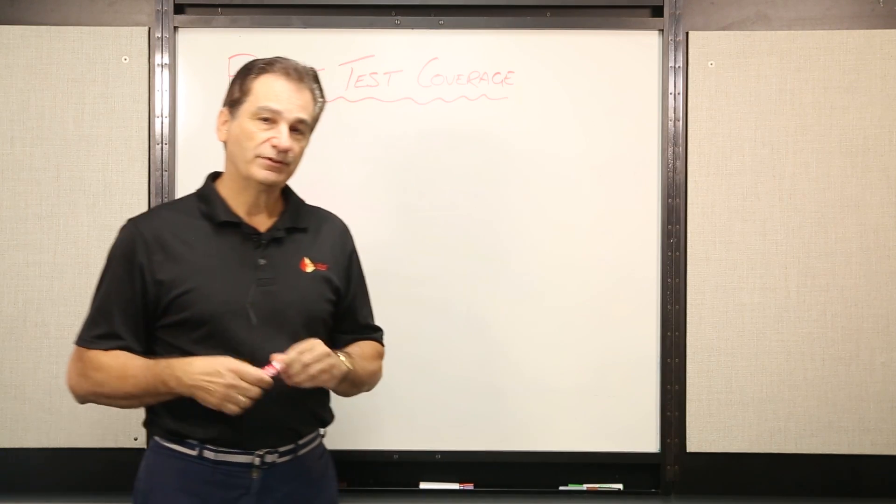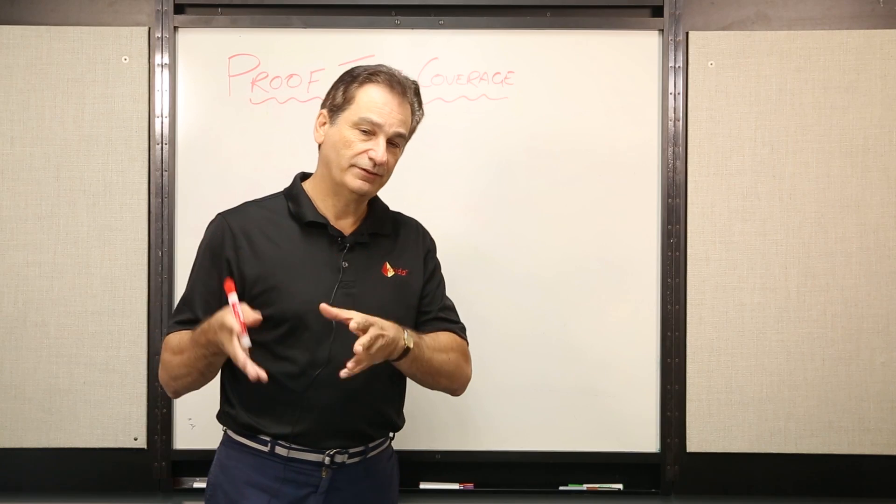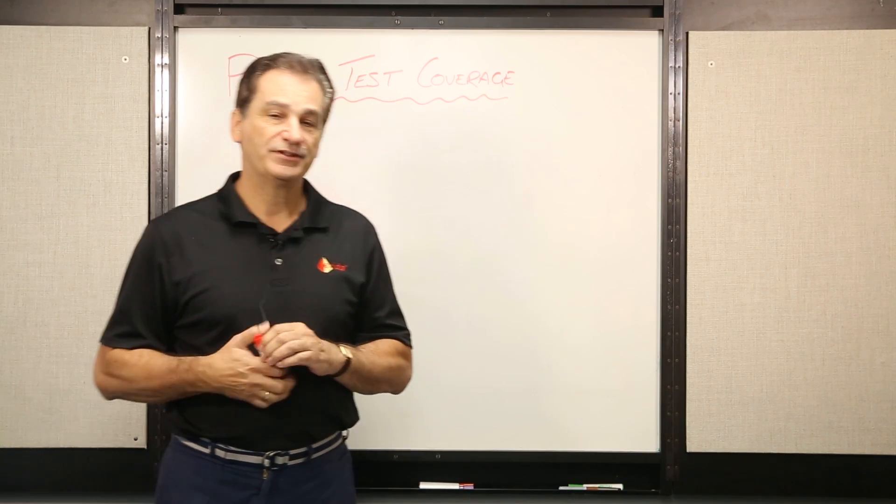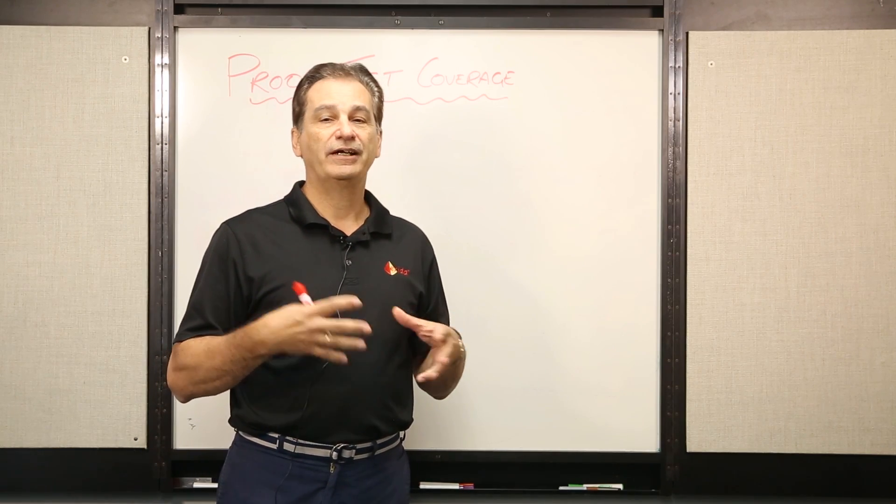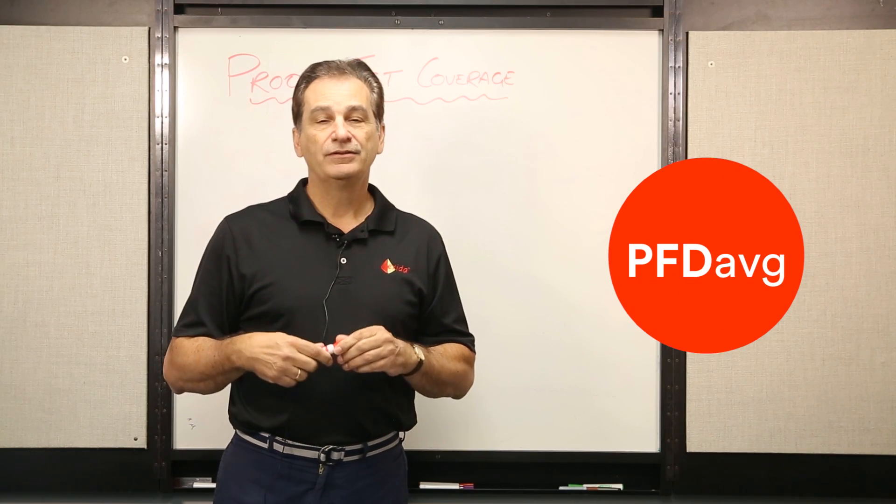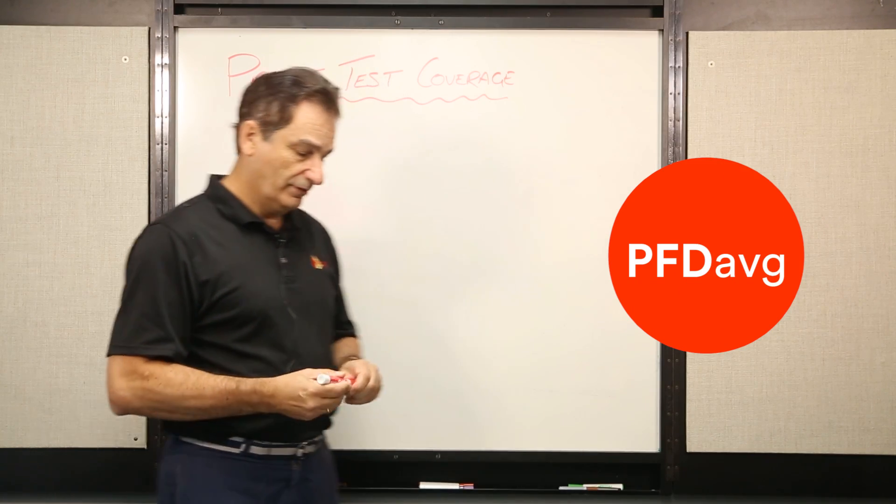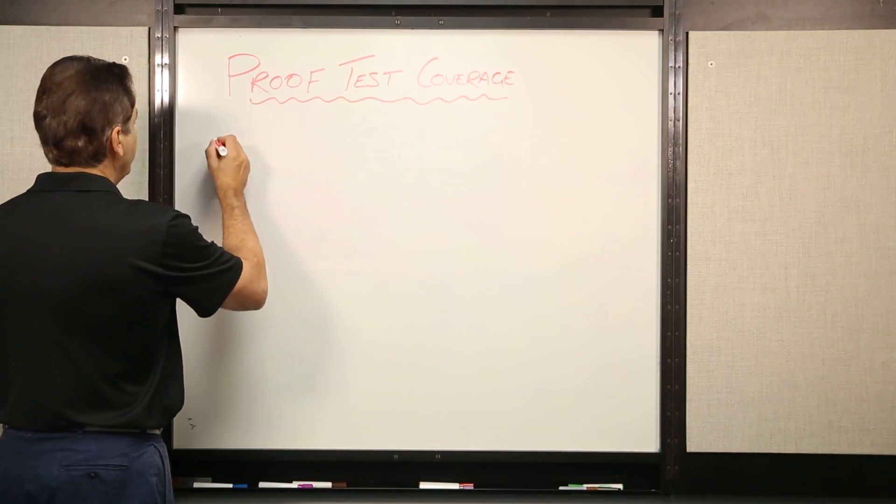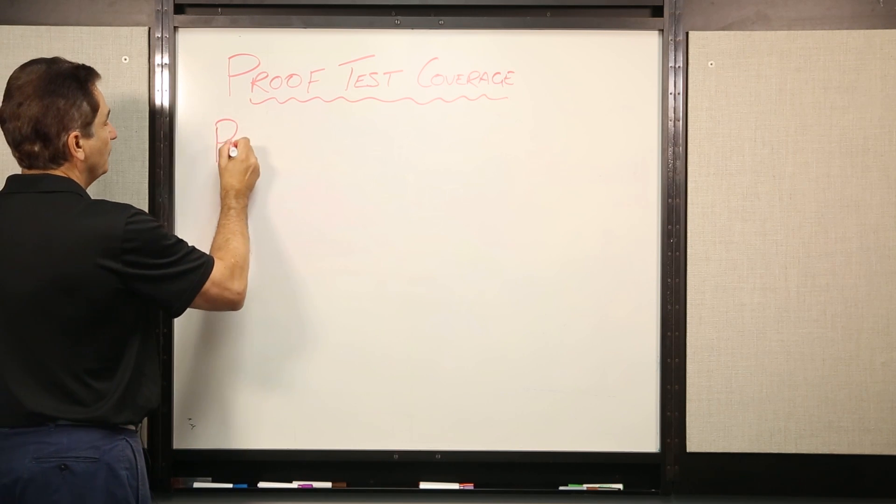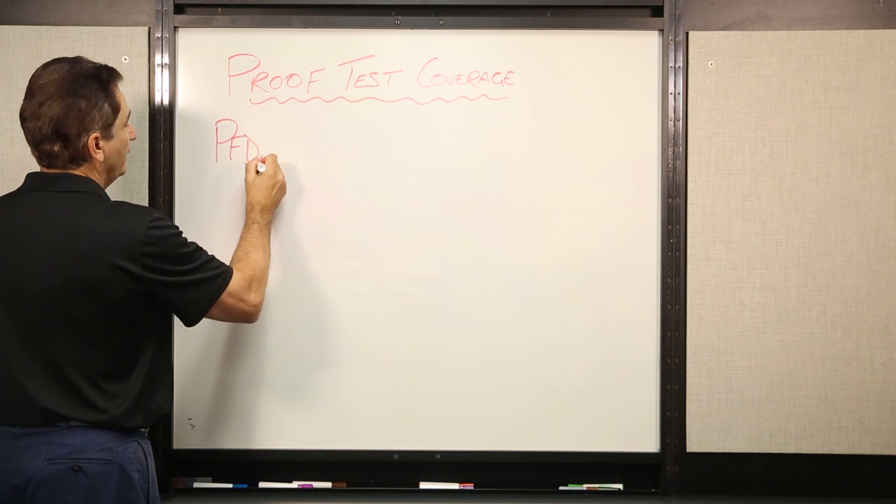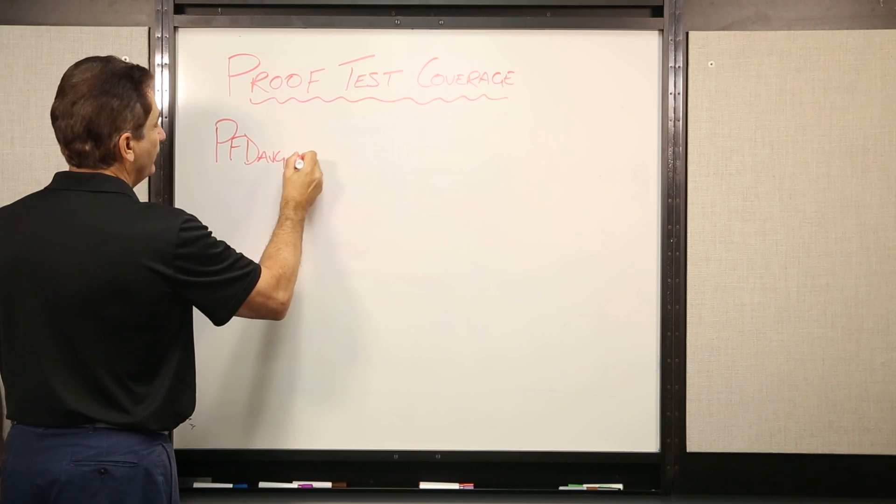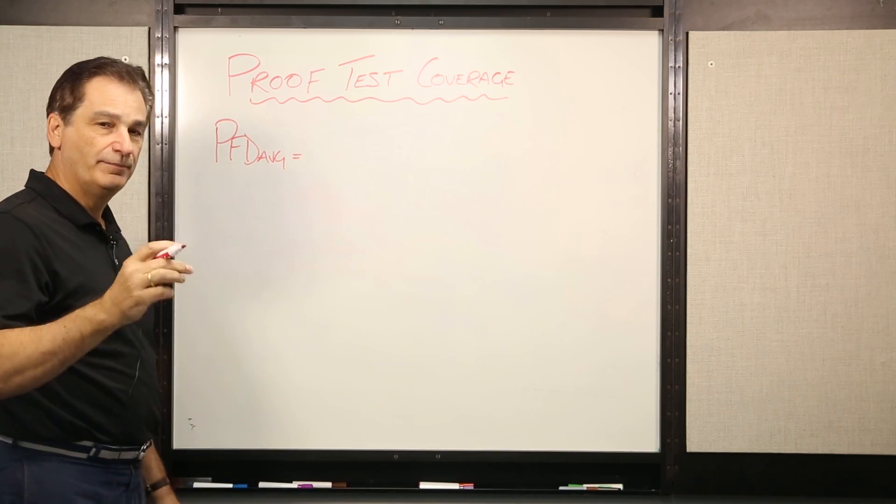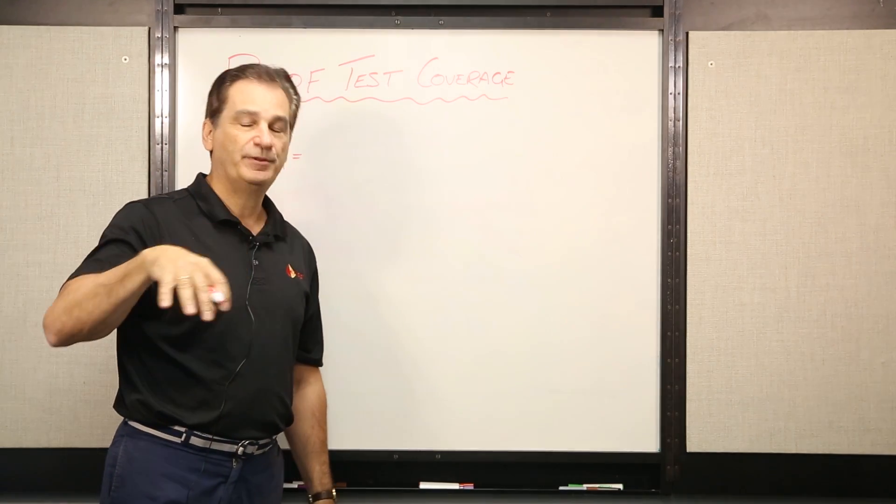So in order to work out the SIL for the SIF, one of the first things we need to do is to figure out the PFD average. The PFD average for the SIF is made up of the individual PFD average for each of the pieces of equipment.